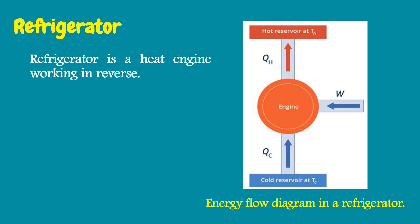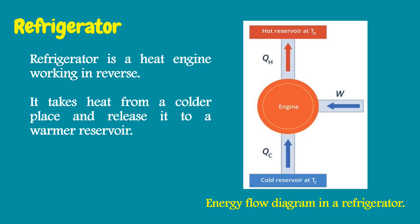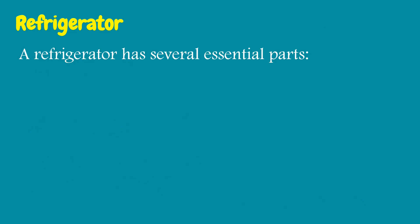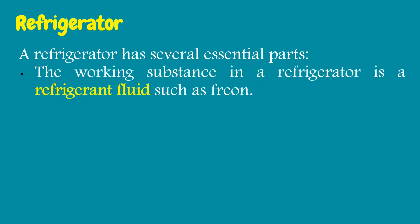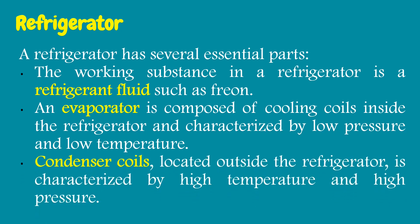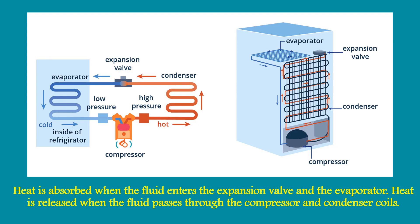A refrigerator is a heat engine working in reverse. It takes heat from a colder place and releases it to a warmer reservoir. It requires a working fluid, which undergoes processes in the compressor unit of the refrigerator. The working substance in a refrigerator is a refrigerant fluid. An evaporator is composed of cooling coils inside the refrigerator, characterized by low pressure and low temperature. Condenser coils, located outside the refrigerator, are characterized by high temperature and high pressure. Heat is absorbed when the fluid enters the expansion valve and evaporator, and heat is released when the fluid passes through the compressor and condenser coil.